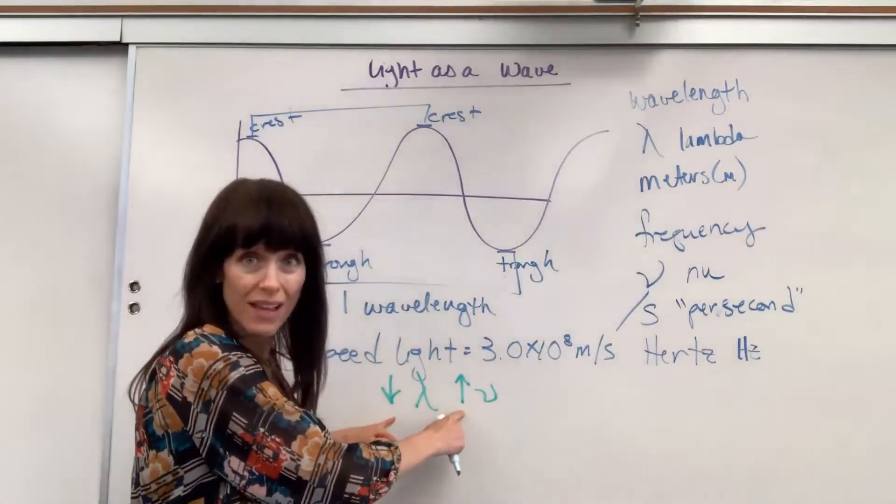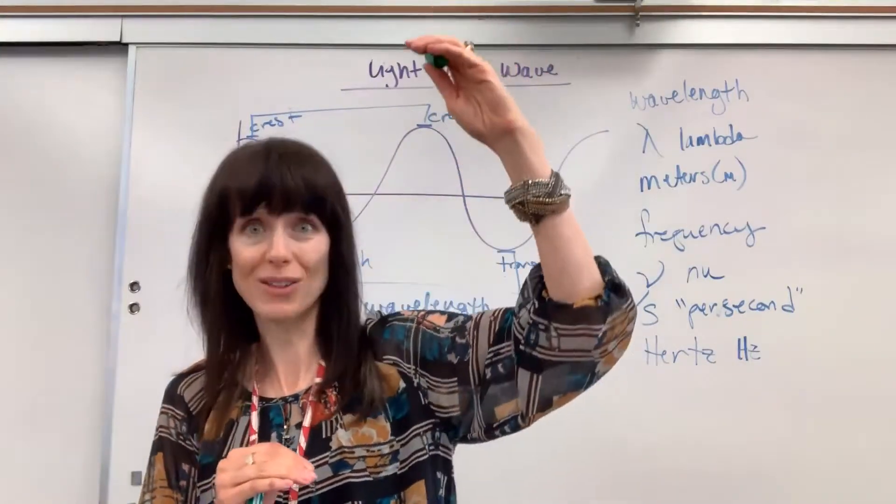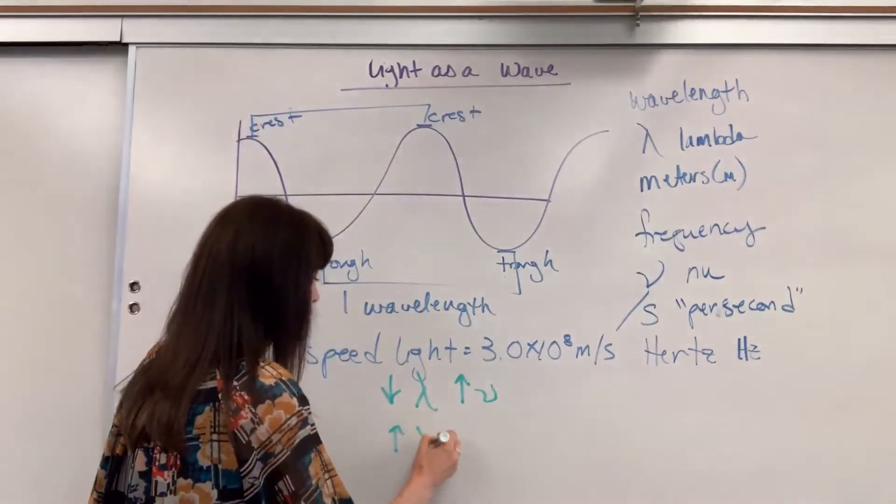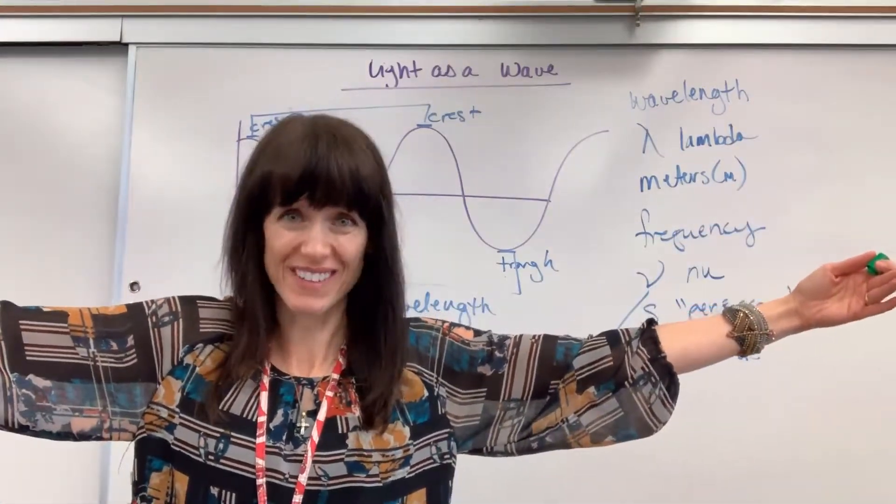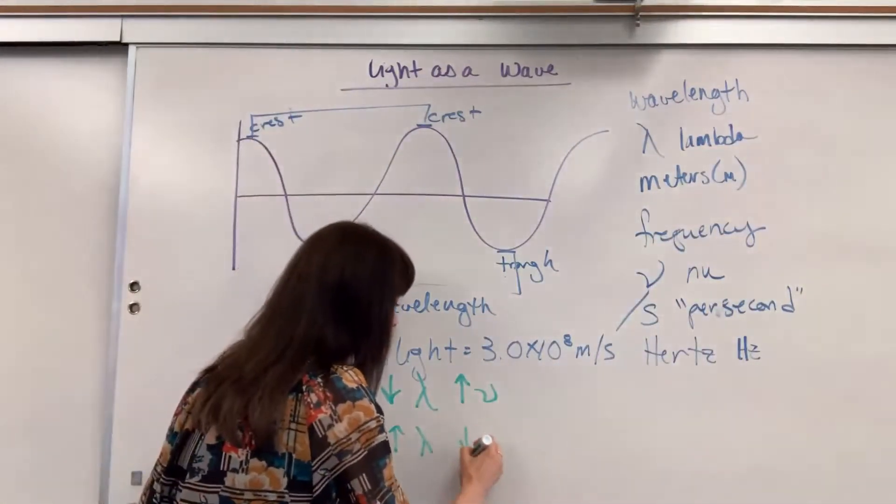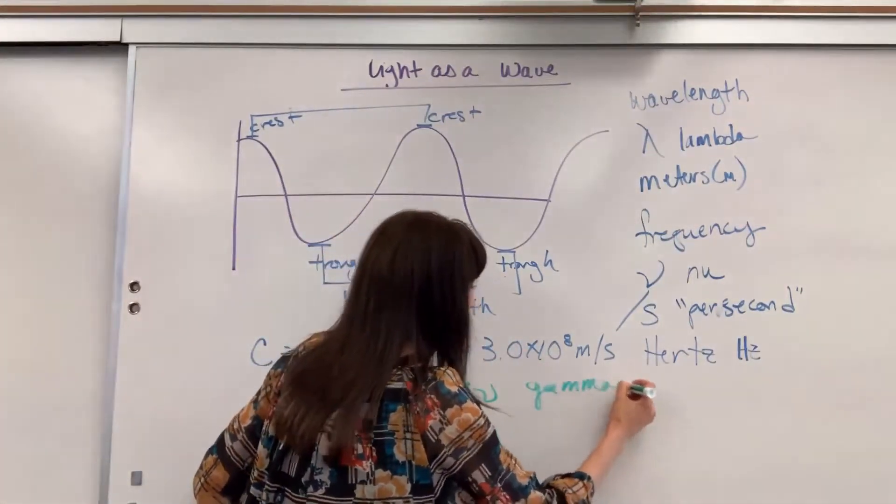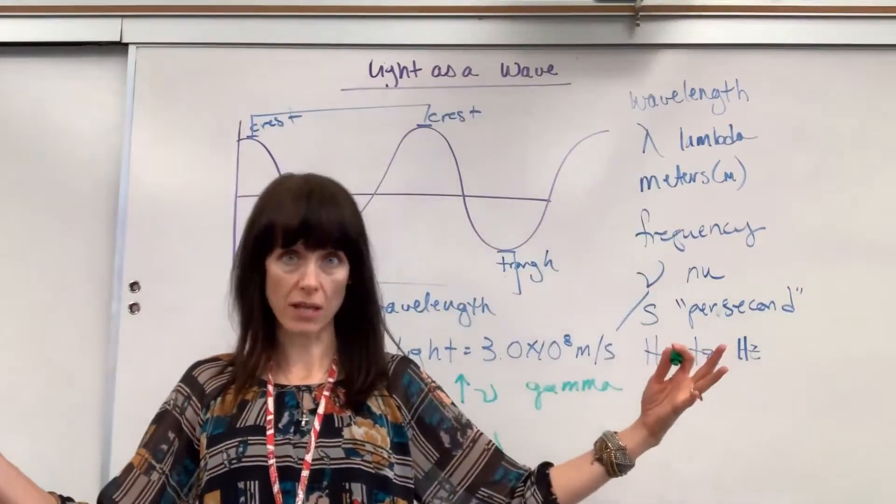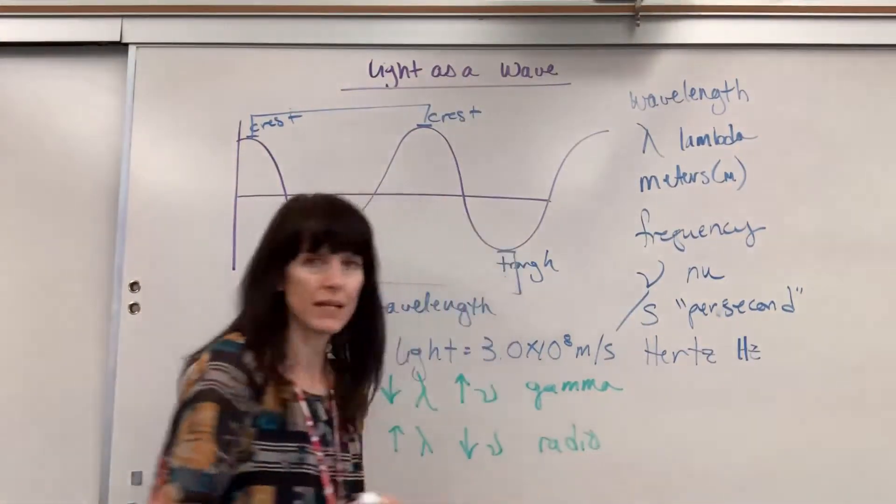Notice these are indirectly related. As one goes down, the other one goes up. As you have a small wavelength, you have a really large frequency. Now the reverse is true. If you have a huge, a large wavelength, so the length of a football field, you can't fit very many of those waves in one second, which means you have a very low frequency. So this situation, a small wavelength, really high frequency, that would be your gamma radiation. A huge wavelength, can't fit very many in one second, low frequency, that's going to be your radio waves.